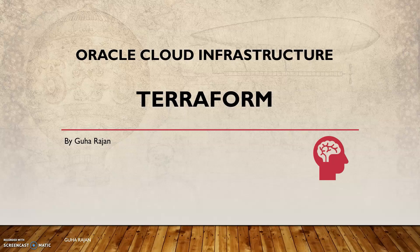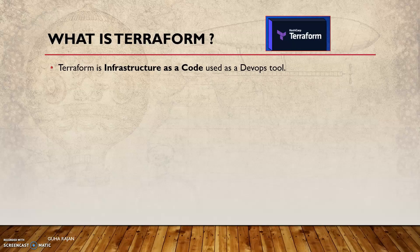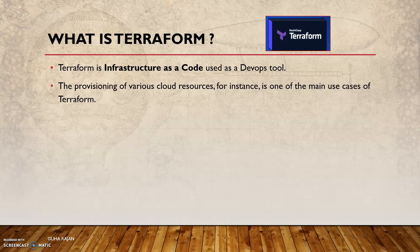So what is Terraform? Terraform is Infrastructure as Code, known as IaC, and used as a DevOps tool. In DevOps, you need to quickly provision across different cloud environments — whether single or multi-cloud — accurately and fast. Rather than doing it manually, you use a DevOps tool. The key point is that it's infrastructure as code, popularly known as IaC.